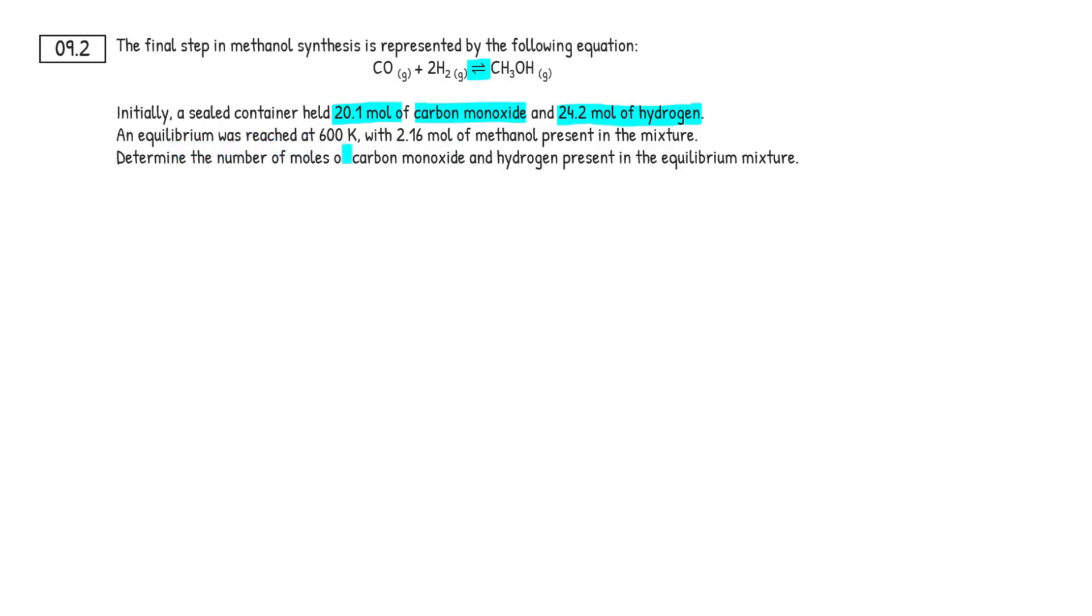An equilibrium was reached at 600 Kelvin. This temperature is not really important here, I'm not going to lie. With 2.16 mole of methanol present in the mixture. It's actually highlighted as well. Determine the number of moles of carbon monoxide and hydrogen present in the equilibrium mixture.